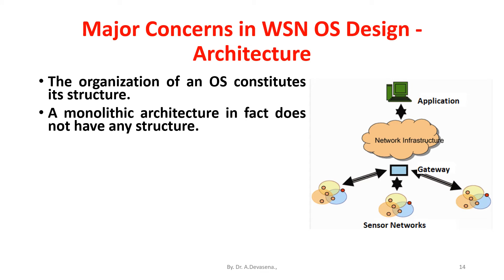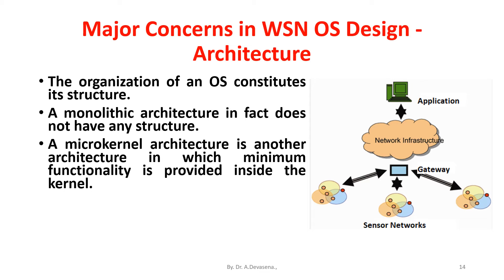A monolithic architecture does not have any structure; services provided by an OS are implemented separately, and each service provides an interface for other services. A microkernel architecture is another architecture in which minimum functionality is provided inside the kernel, thus the kernel size is significantly reduced.